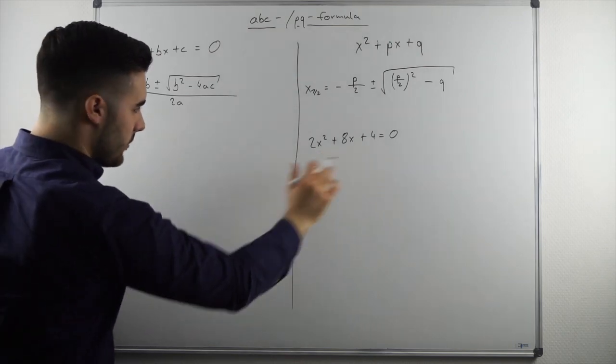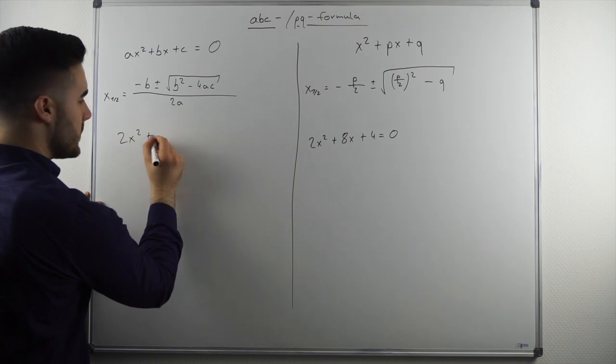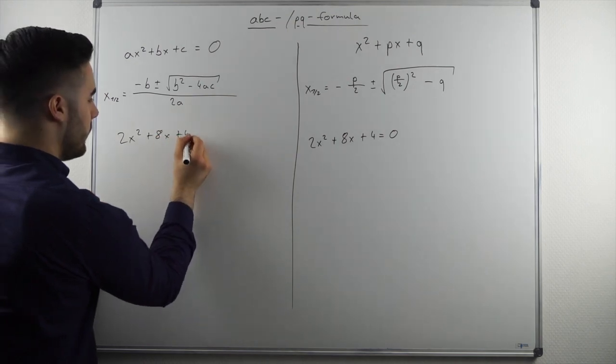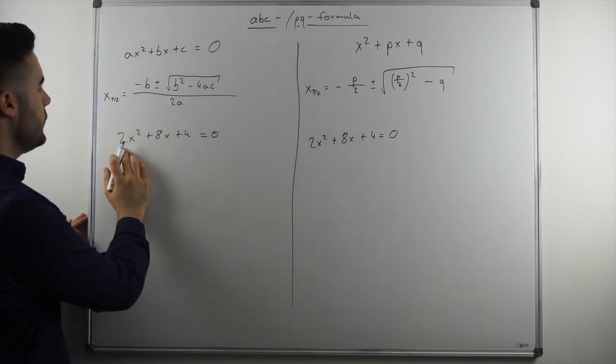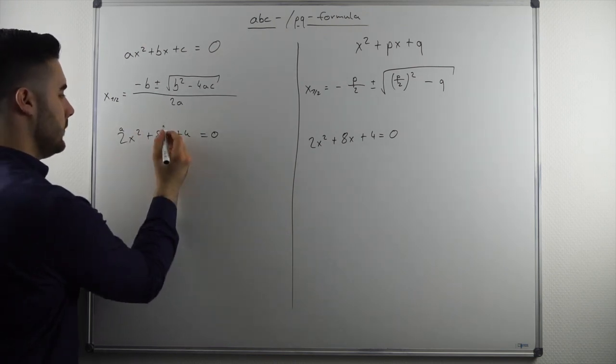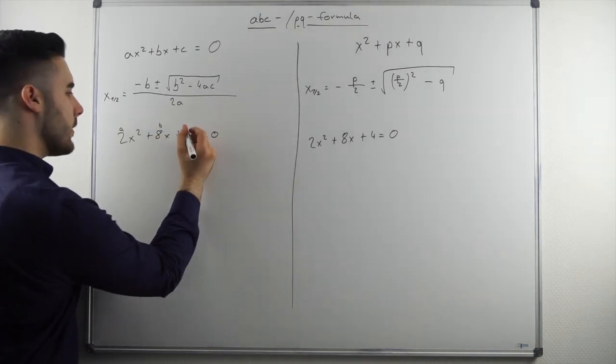So that means if we have a function of, let's say we take this function that we have on the right. 2x squared plus 8x plus 4 and we have equal to 0. So then we would look like what do we have. So 2 is a, 8 is b and 4 is c.